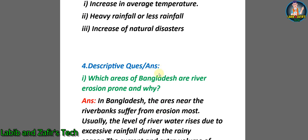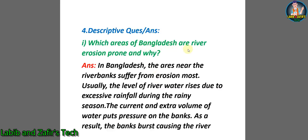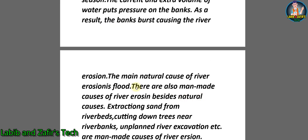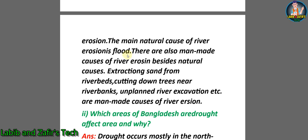Now let's go through descriptive question answers. Question one: Which areas of Bangladesh are riverbank erosion prone and why? Answer: In Bangladesh, areas near the river banks suffer more from erosion. Usually, the level of river water rises due to excessive rainfall during the rainy season. The current and extra volume of water puts pressure on the banks; as a result, the banks erode, causing river erosion. The main natural cause of river erosion is flood. Man-made causes include extraction of sand from river beds, cutting down trees near river banks, and illegal river excavation.